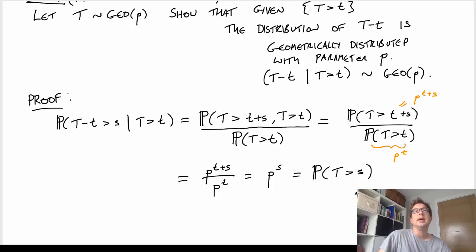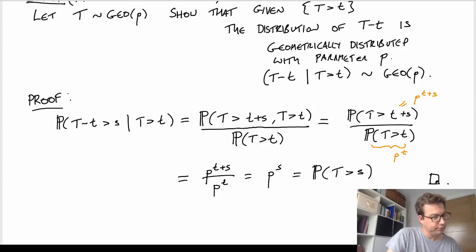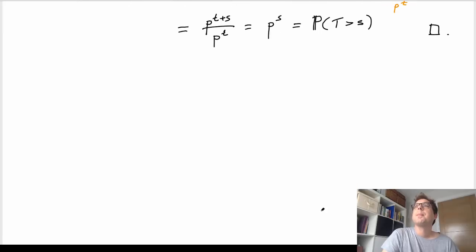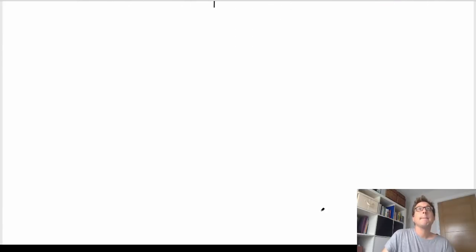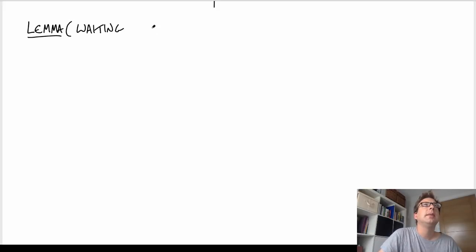That's a slightly more formal way of saying that once we've had t heads in a row, the amount of time to wait for the next heads is exactly the same as if we started from time zero, not conditioned on anything. Now, one more exercise — a lemma on waiting for a bus. This is something that people experience in real life, and it relates to an area of probability sometimes called Palm probabilities.